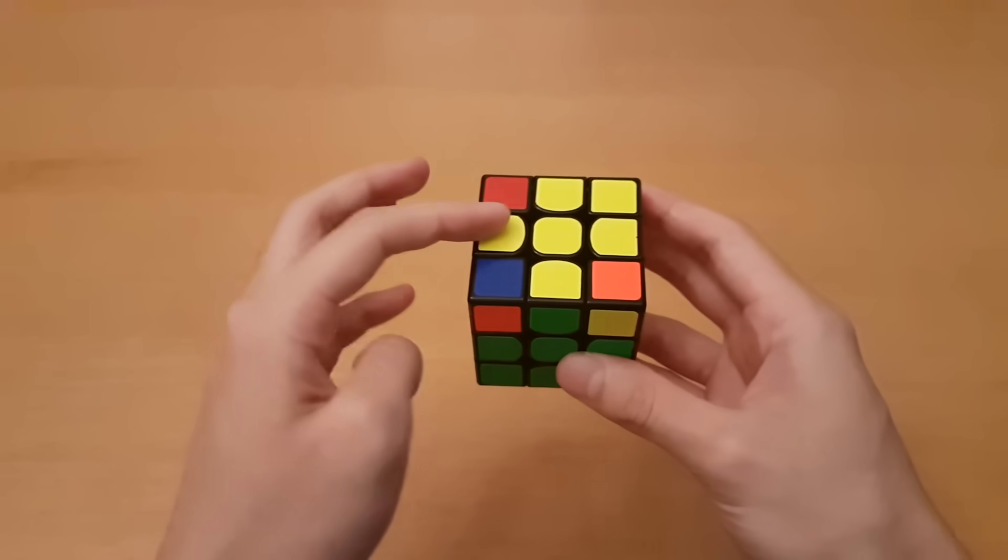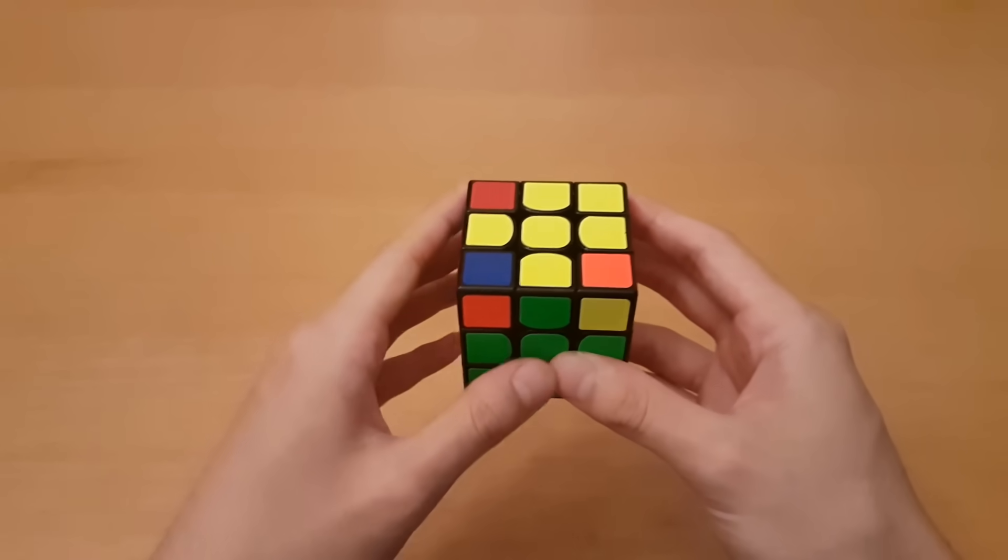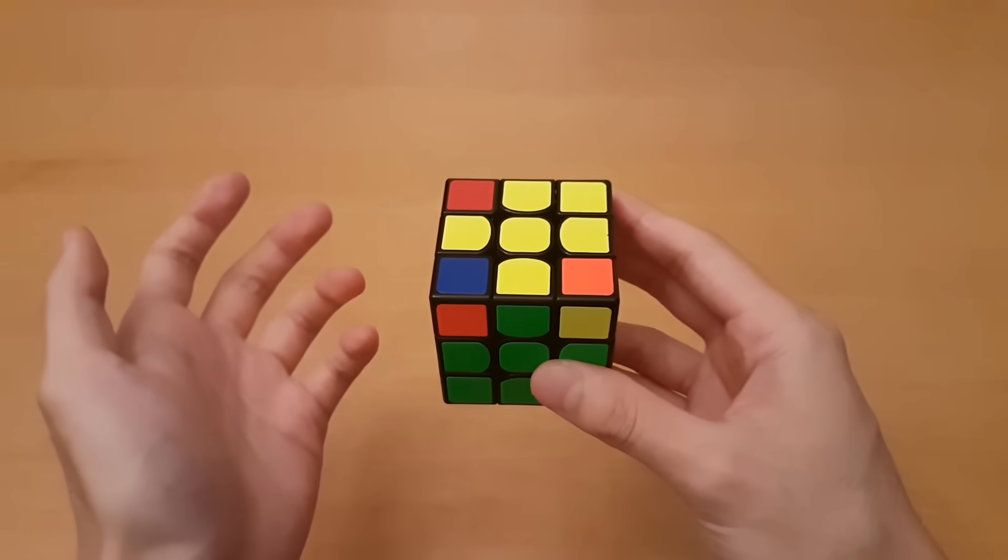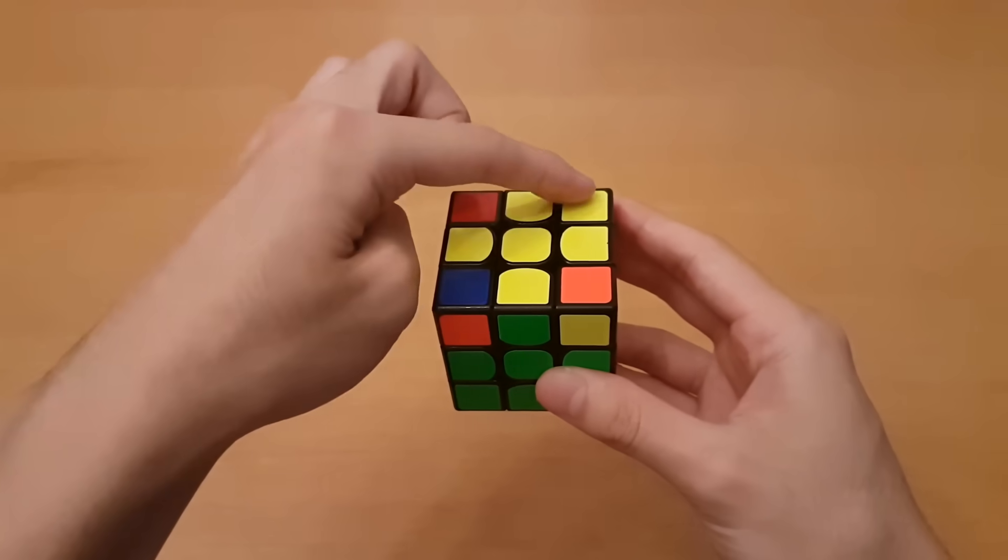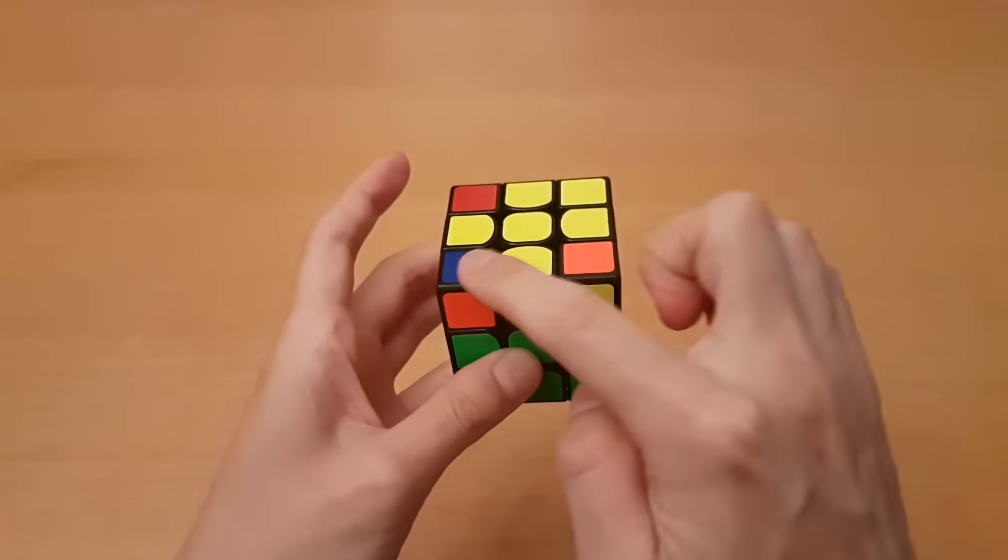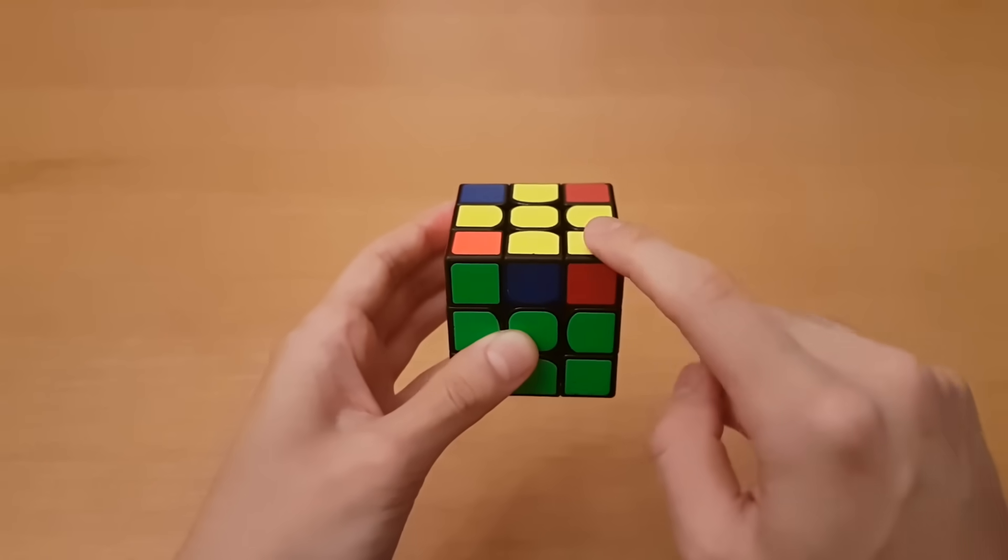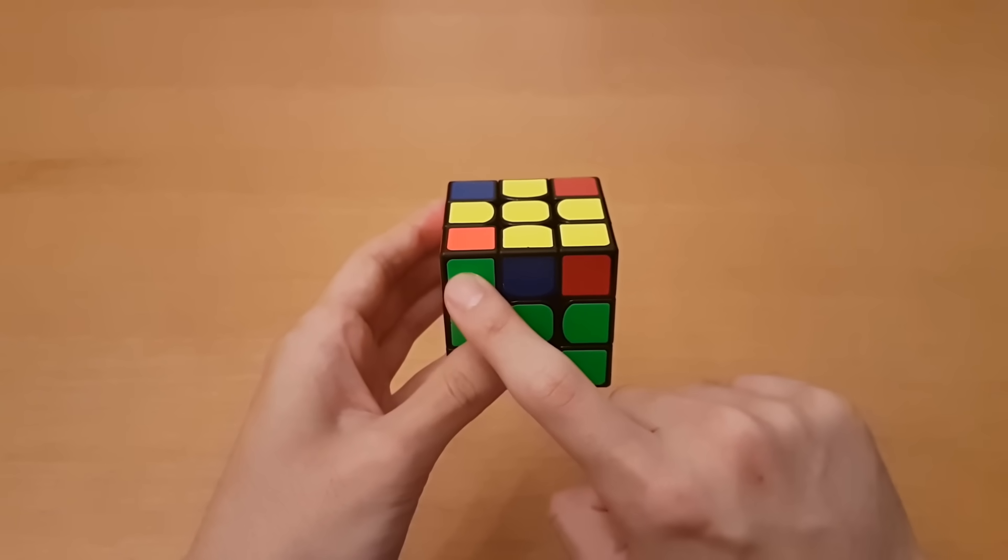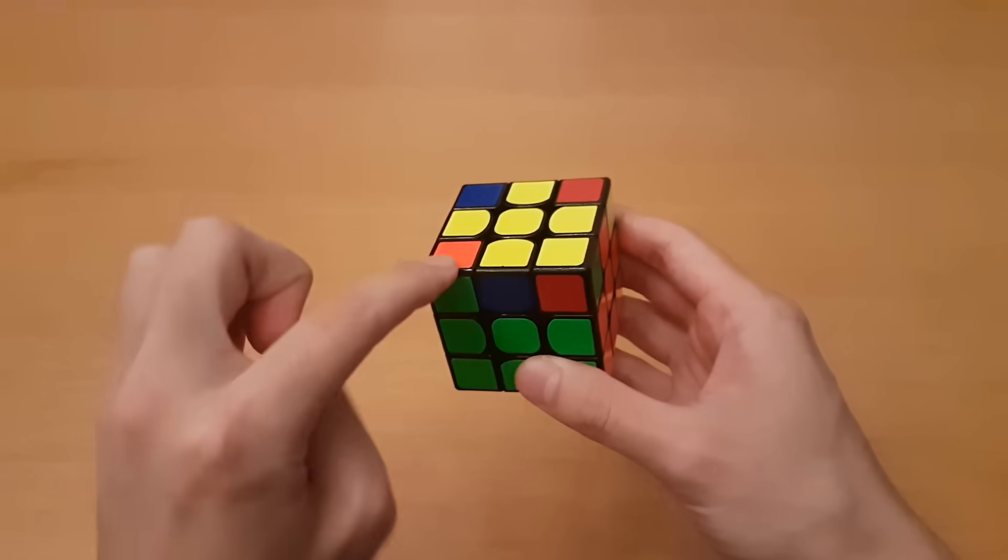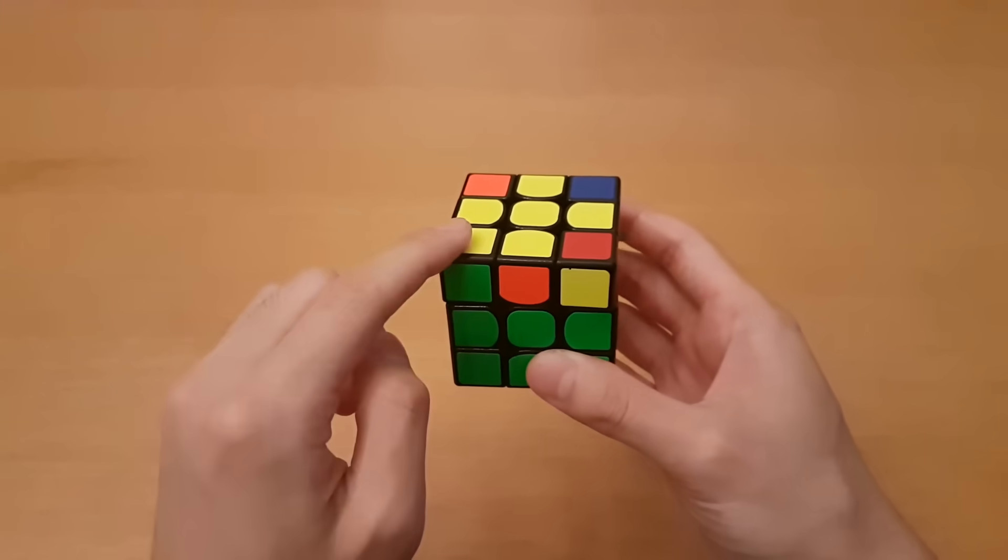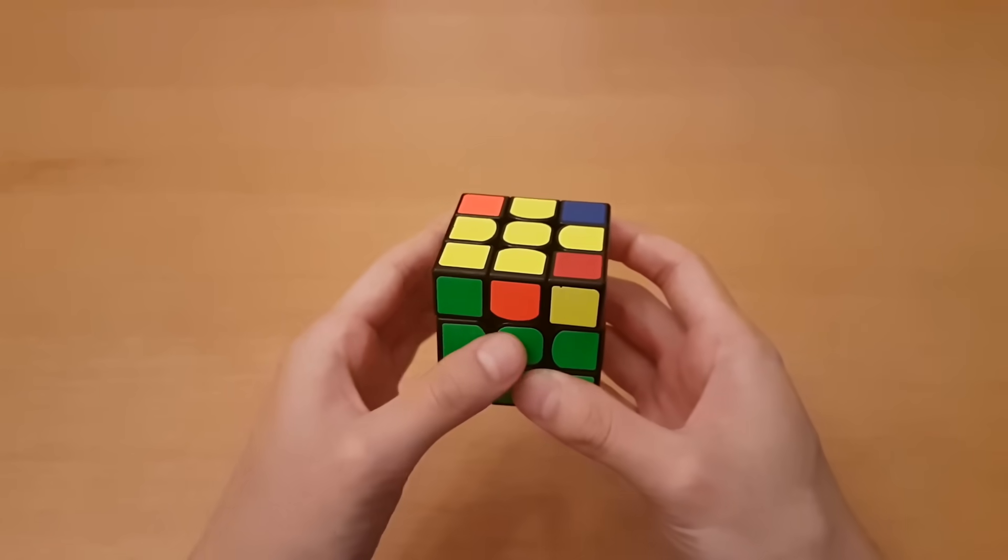Once you've solved the cross, then the next step is to get all of the same colors on top. I'm going to see how many corners are facing up already, and here we only have one. So if you only have one, just move that so it's on the front, and then make sure you can also see yellow over here on the front. So now it's still on the front, but we see yellow here. This is the correct way to hold it.